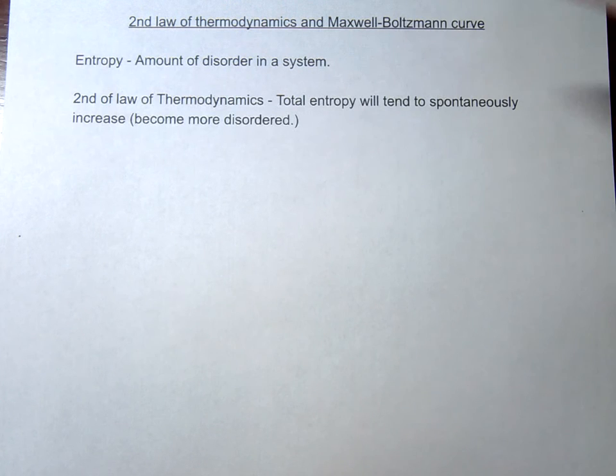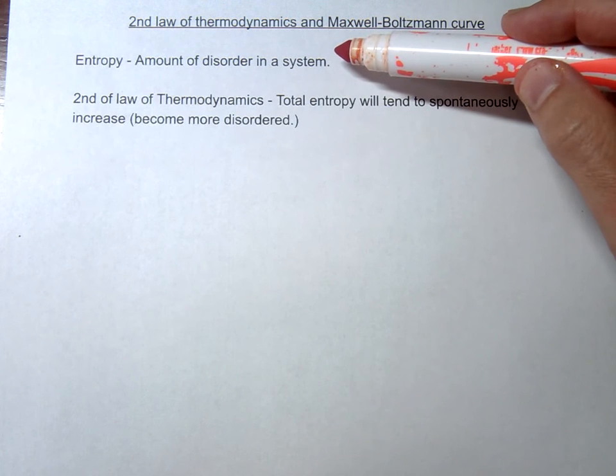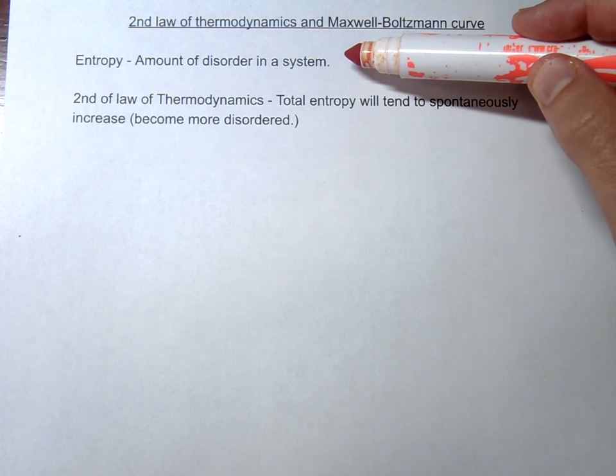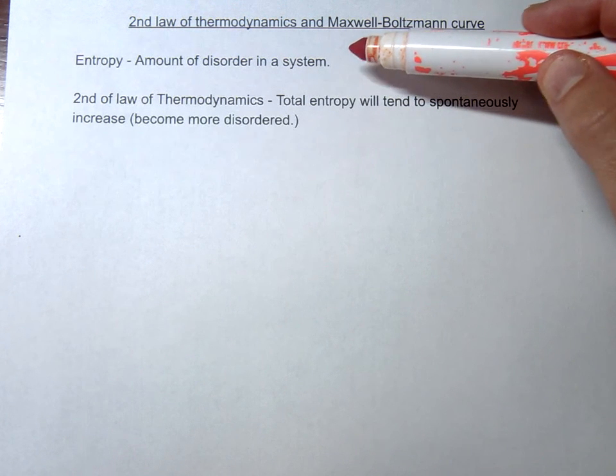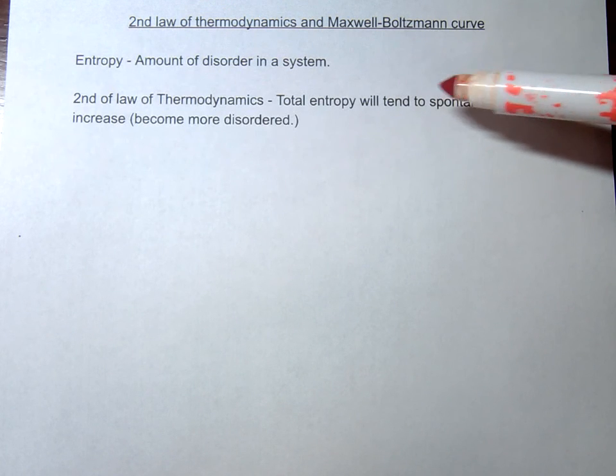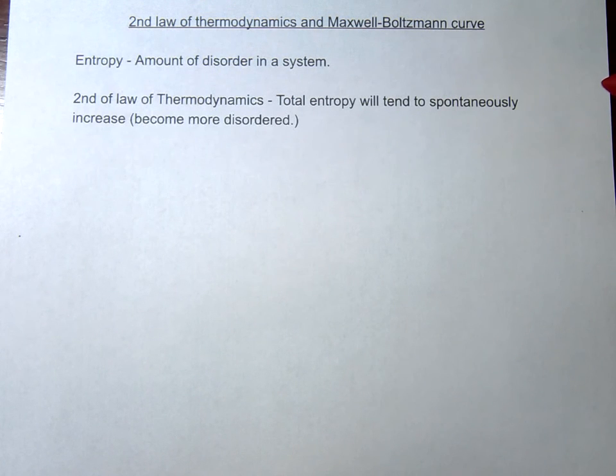Just recall when we define entropy, we basically mean the amount of disorder, so how much disorder there is or the number of possible states. The second law then says that total entropy will tend to spontaneously increase. That means processes will naturally move to a state of more disorder, increasing entropy.